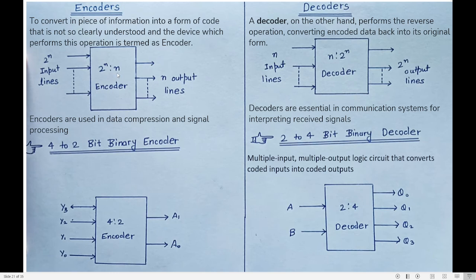An encoder is nothing but a device which converts a piece of information into a form of code. Any device which is used to convert information to code is called an encoder.